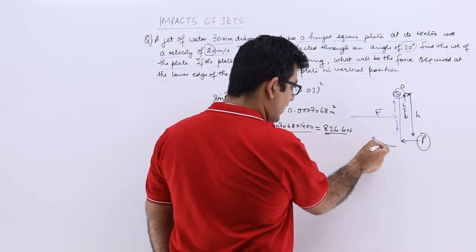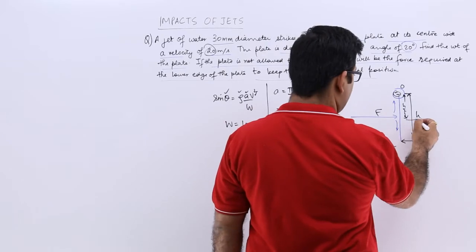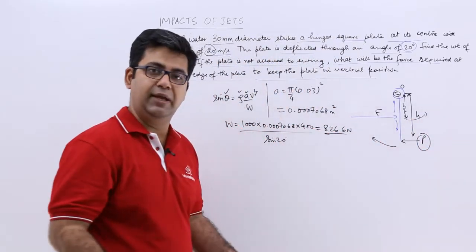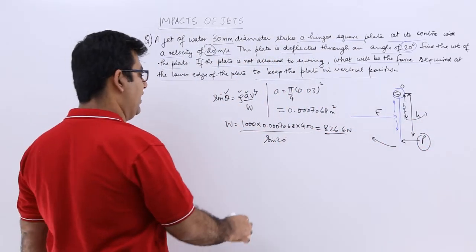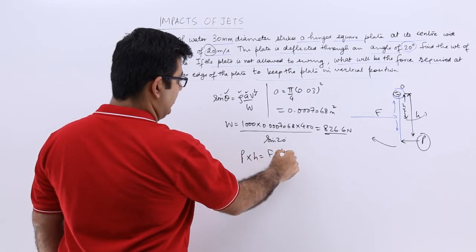With this, it will try and go in that direction, and with this, it will try and go in that direction. So they are basically equal and opposite moments. You will have p into h equals f into h by 2.